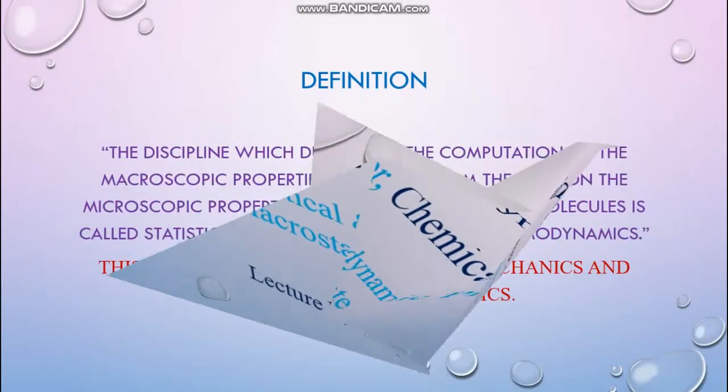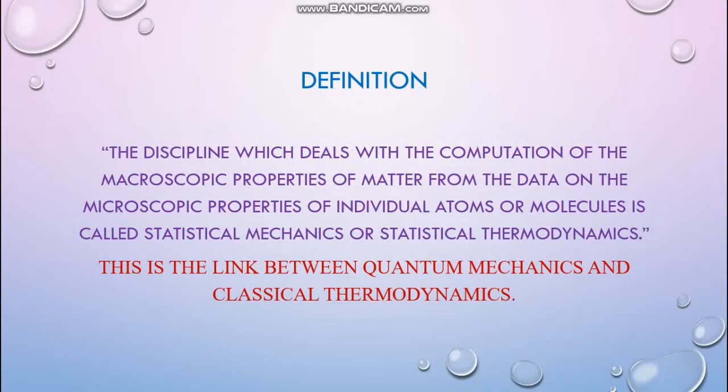What is the definition of statistical thermodynamics or statistical mechanics? The discipline which deals with the computation of the macroscopic properties of matter from the data on the microscopic properties of individual atoms or molecules is called statistical mechanics or statistical thermodynamics. It is actually the link between quantum mechanics and classical thermodynamics.